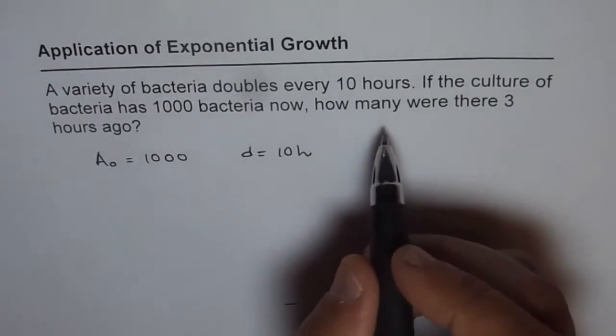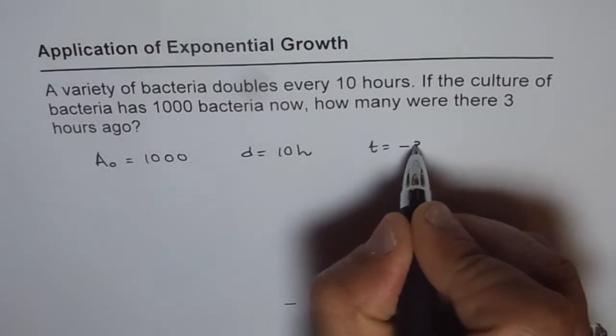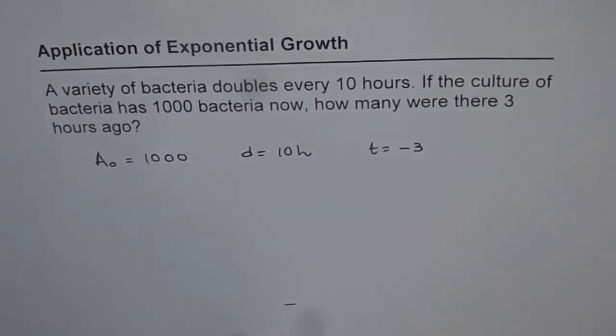We need to find how many were there 3 hours ago. That means time is minus 3. 3 hours ago means time is minus 3.